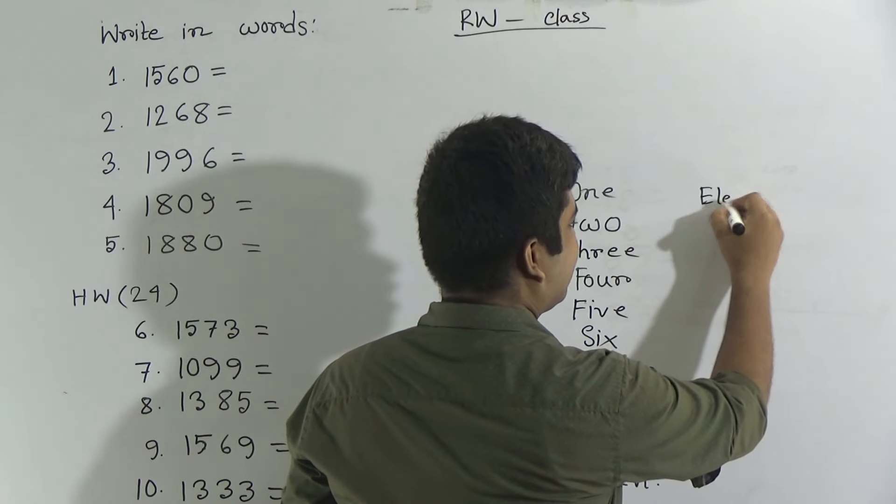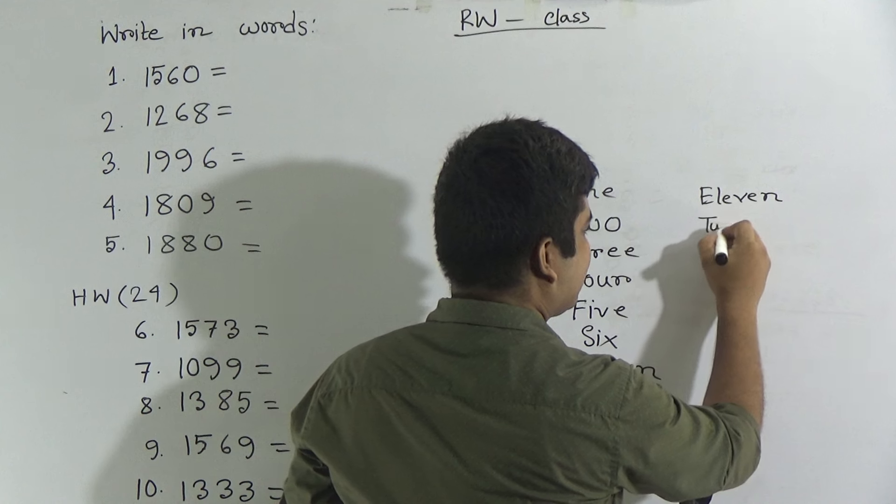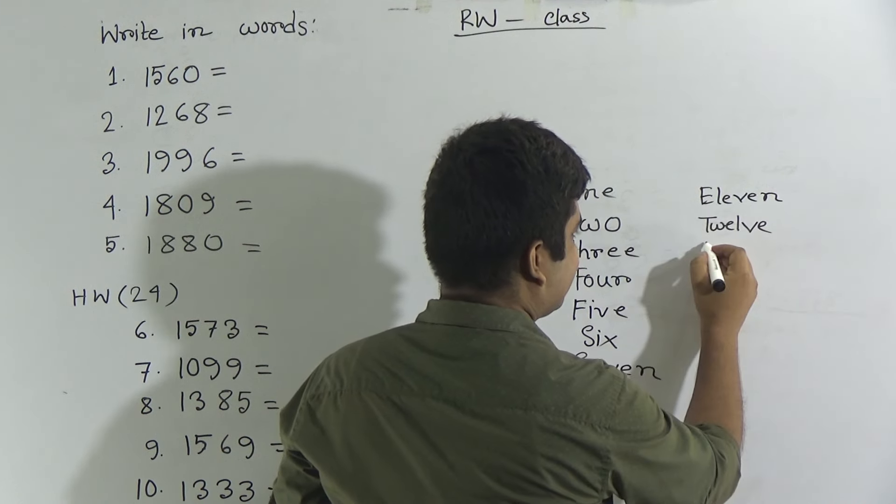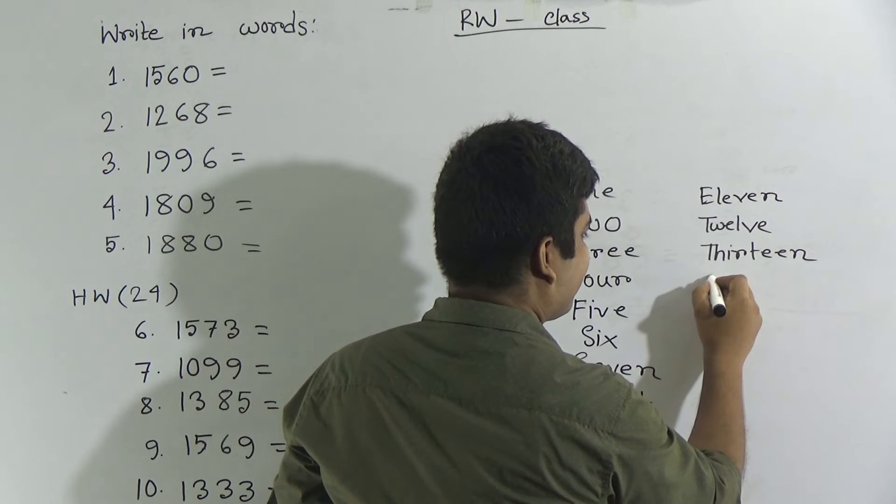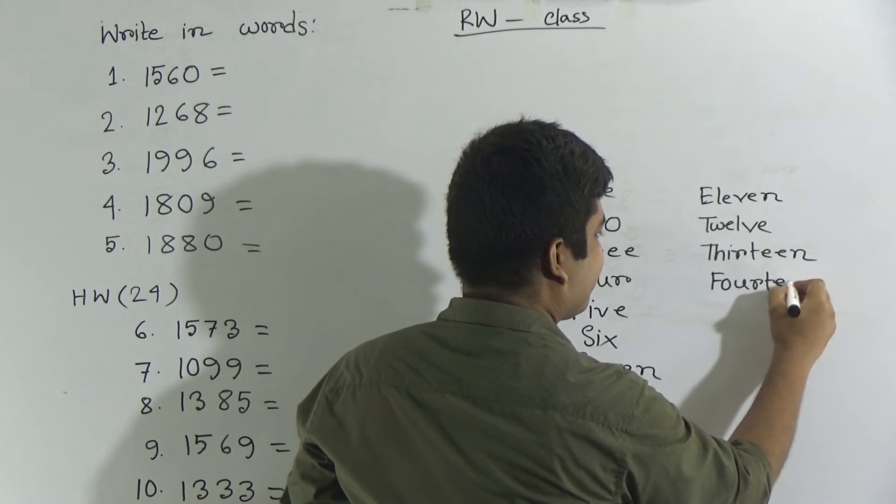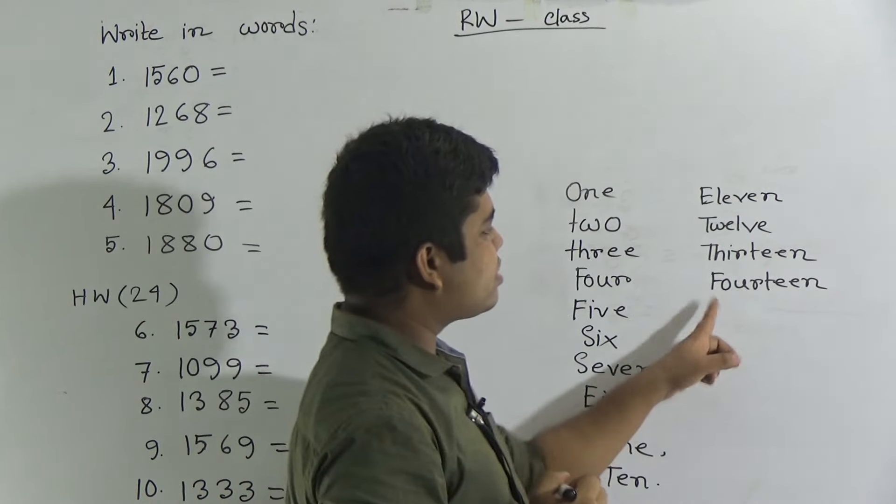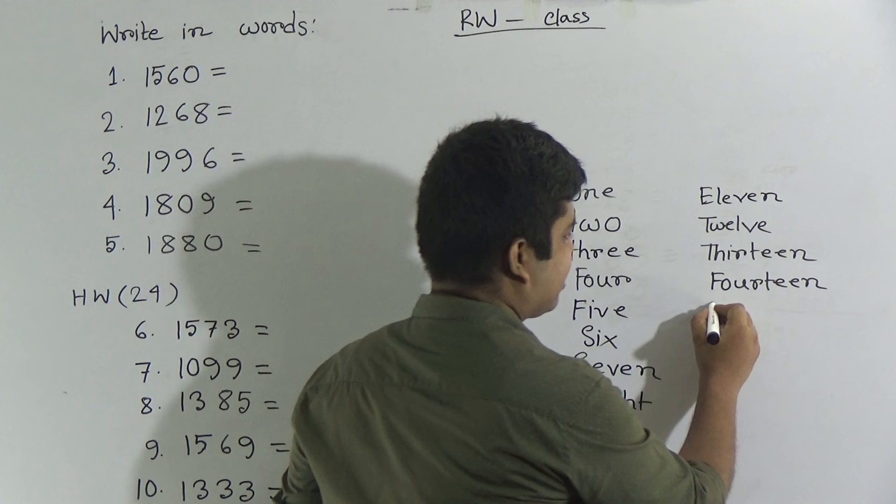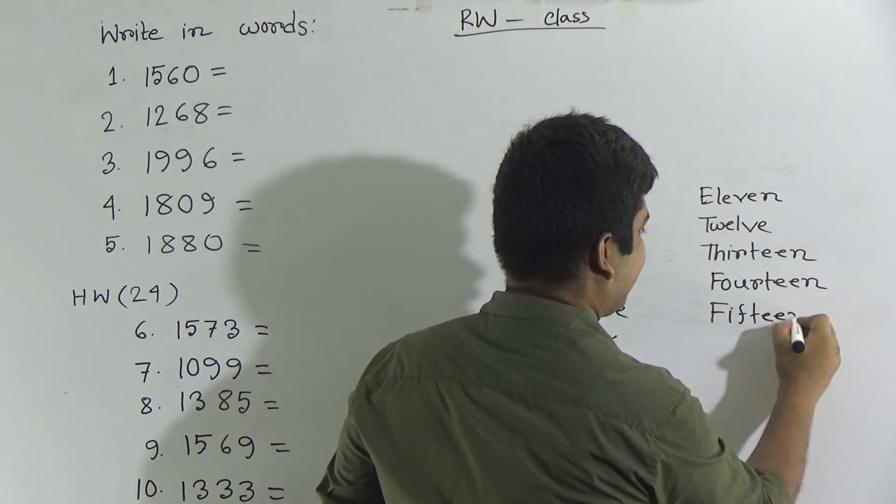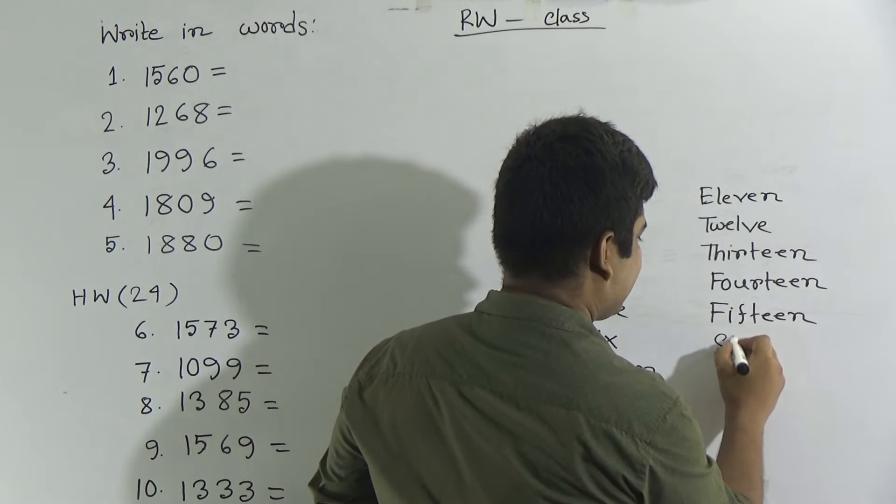Dear students, 11 E-L-E-V-E-N, 12 T-W-E-L-V-E, then 13 T-H-I-R-T-E-E-N, 14 F-O-U-R-T-E-E-N. Please notice 14 spelling is F-O-U-R-T-E-E-N. Next 15 F-I-F-T-E-E-N, 16 S-I-X-T-E-E-N, 17 S-E-V-E-N-T-E-E-N, 18 E-I-G-H-T-E-E-N, 19 N-I-N-E-T-E-E-N.